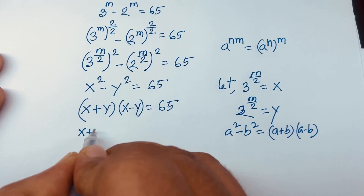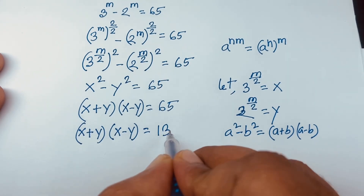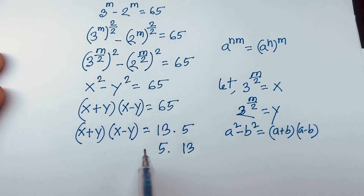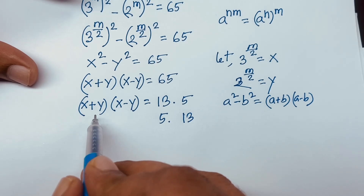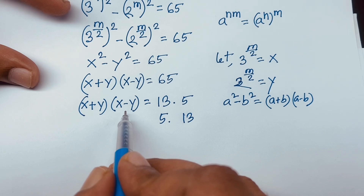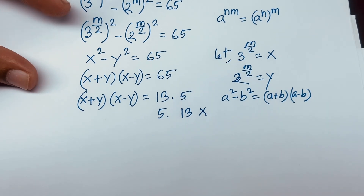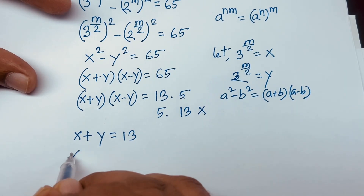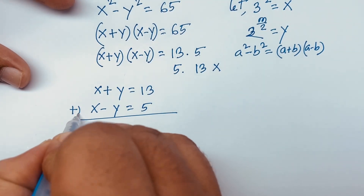Now, 65 can be factored as 13 times 5. Since X + Y is the larger number and X - Y is the smaller number, I assign X + Y = 13 and X - Y = 5.